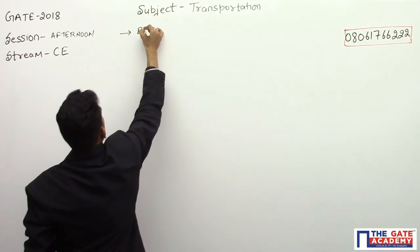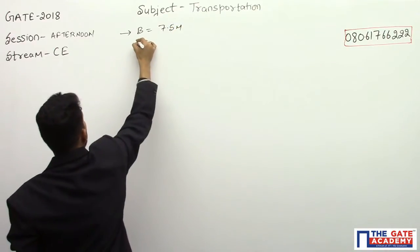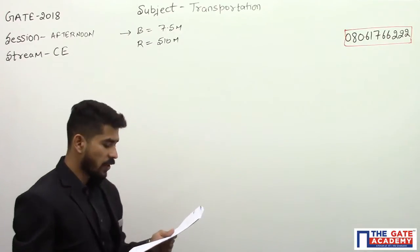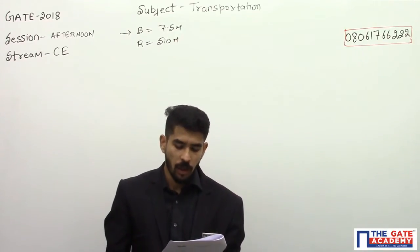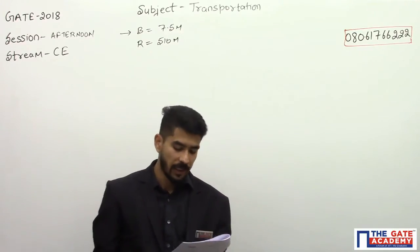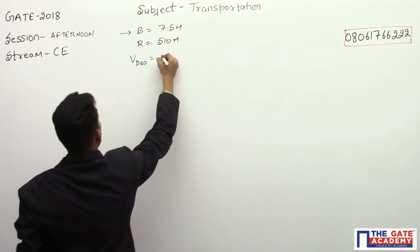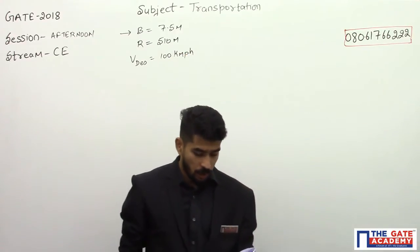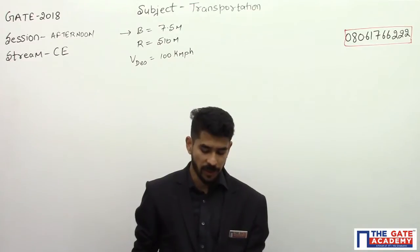Width of the road is given as 7.5 meters and radius is given as 510 meters. For a design speed of 100 kilometers per hour, super elevation is provided as per IRC 73-1980. Design speed is equal to 100 kmph. Consider acceleration due to gravity as 9.81 meters per second square.